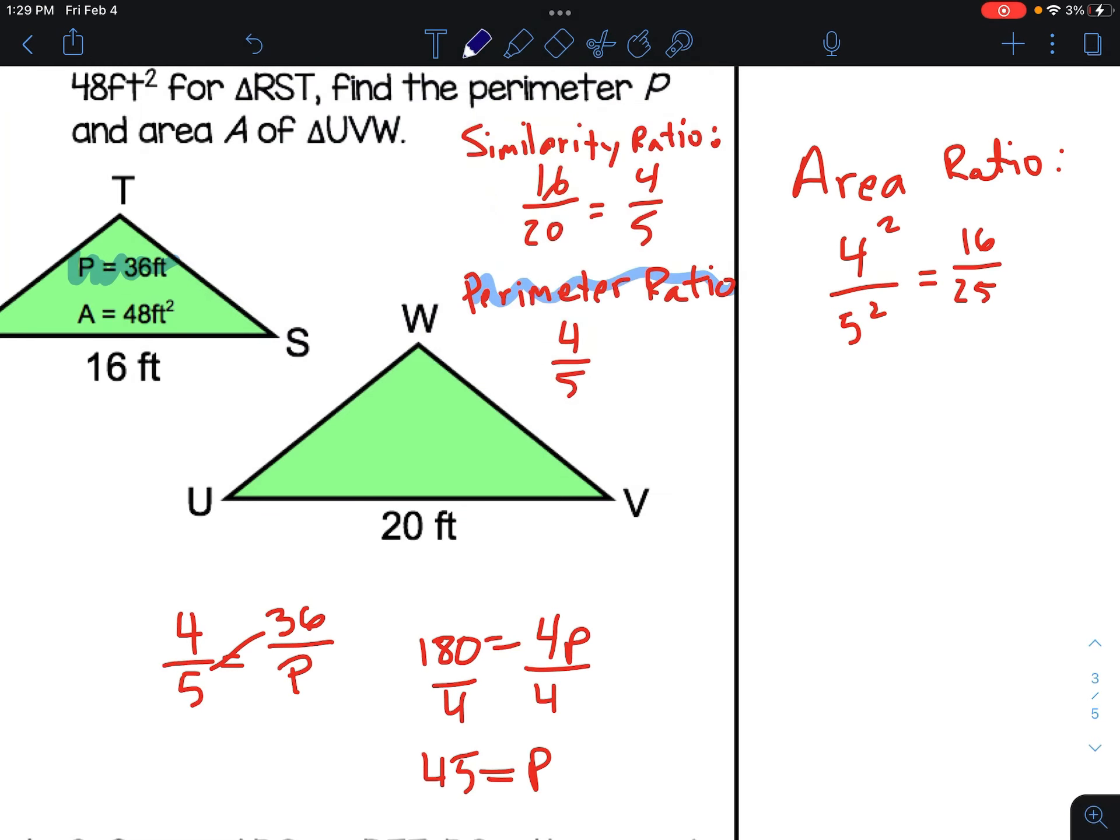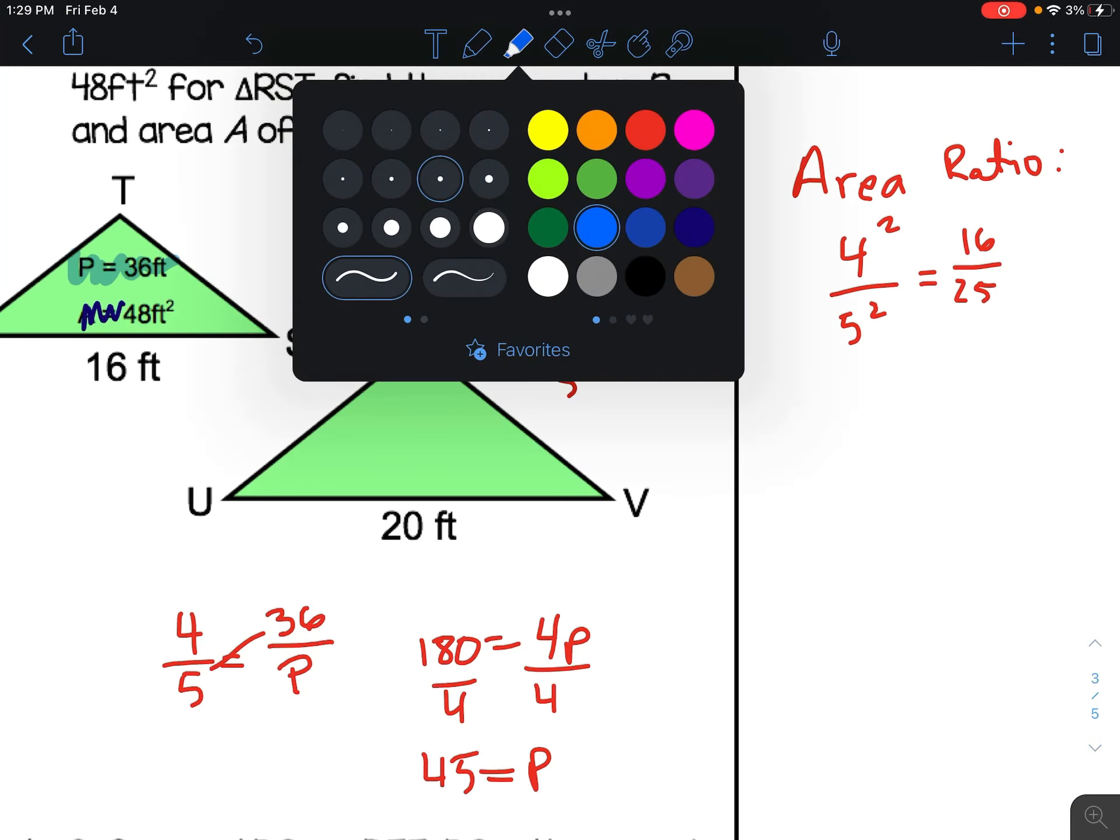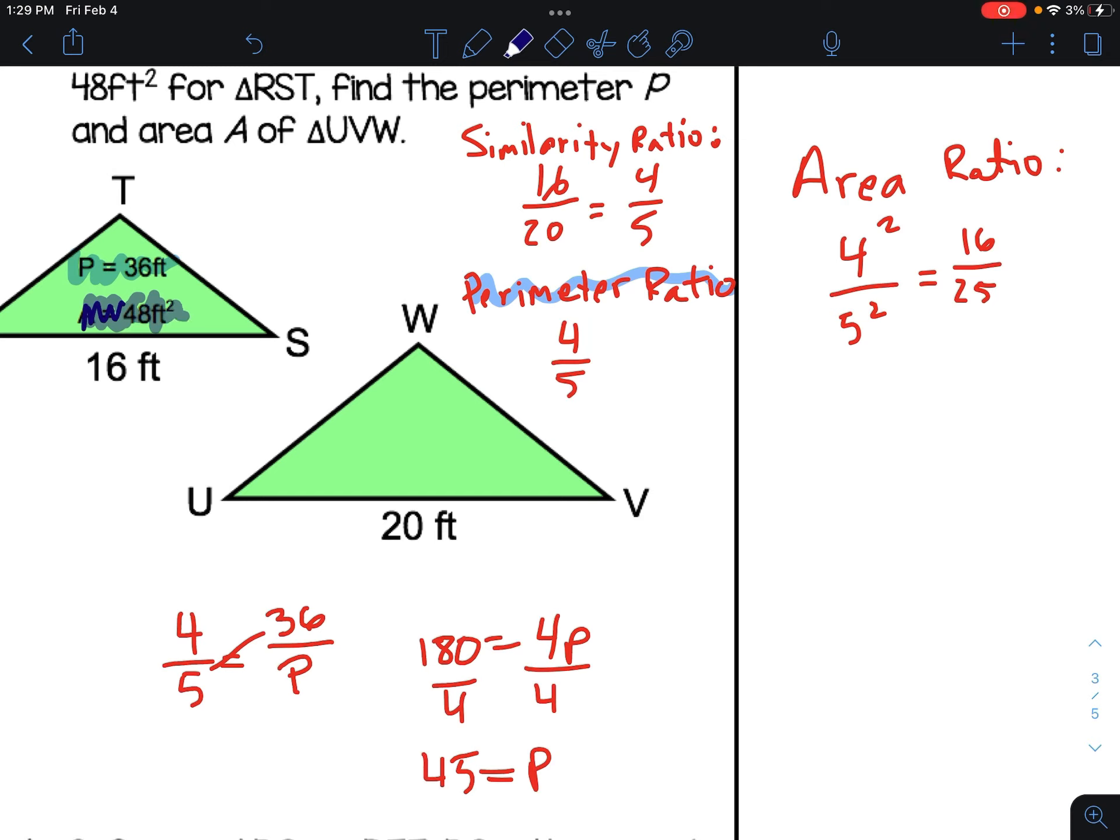Do the same thing for area. They give us the area is 48 square feet. So we are going to use the area ratio of 16 to 25. And we are going to set that equal to, well, the area of the smaller one is 48, and the area of the bigger one we don't know, so we can call it X or let's just call it area. So we cross multiply. 16 times A is 16A, and then we have 25 times 48, which is a grand total of 1,200. 1,200 divided by 16 is a grand total of 75. So now the one thing I was missing, this is 45 feet. And then since we're talking area, it'd be 75 square feet.